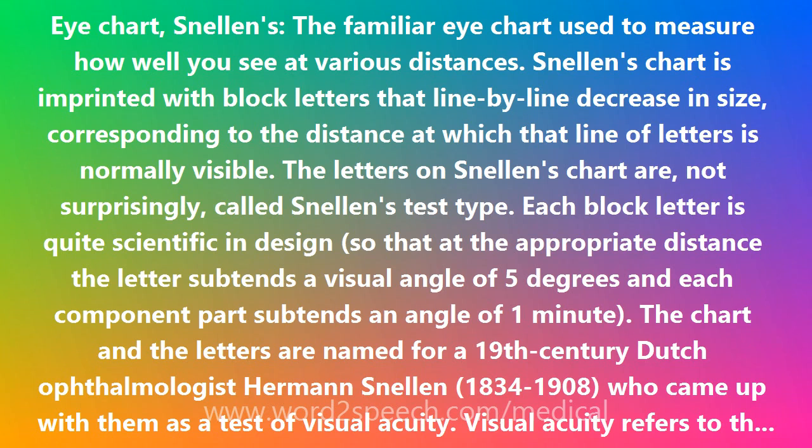The letters on Snellen's chart are, not surprisingly, called Snellen's test type. Each block letter is quite scientific in design, so that at the appropriate distance the letter subtends a visual angle of 5 degrees and each component part subtends an angle of 1 minute. The chart and the letters are named for a 19th-century Dutch ophthalmologist Herman Snellen, 1834–1908, who came up with them as a test of visual acuity.